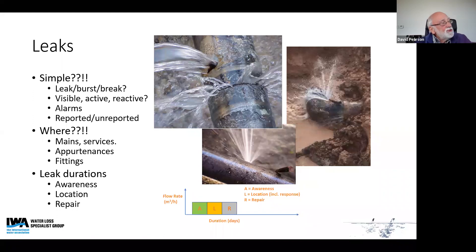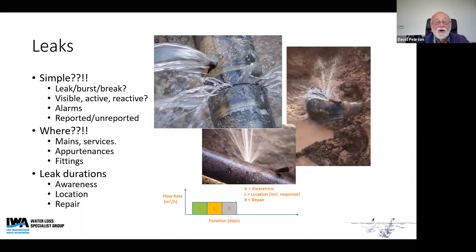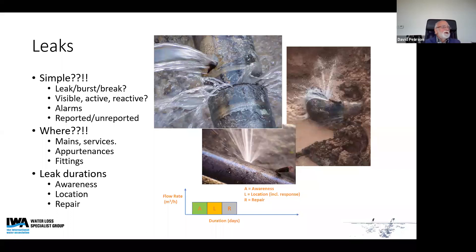Where do leaks occur? They can occur on mains or services, and on fittings and appurtenances — the valves and pieces of kit that are attached. Leak durations are analysed by three categories: awareness, location (which might include the response time due to an active leakage control survey), and repair.